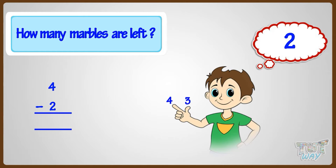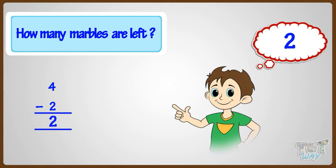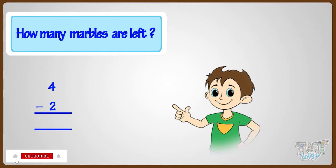Now count the fingers: one, two. Yeah! So two is your answer. We did it! Four minus two equals two.